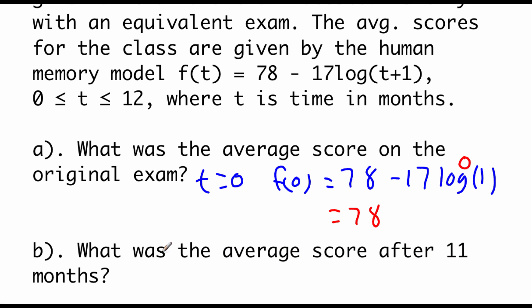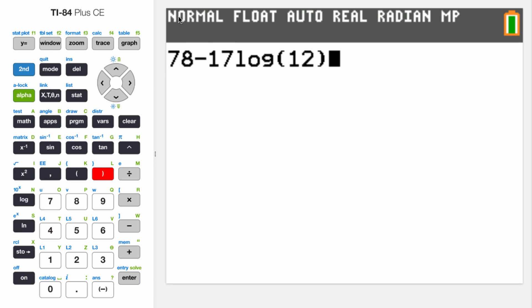Now we're going to look at what the average score was after 11 months. So we look at f of 11. So that's 78 minus 17 times the log of, well, if we take 11 plus 1, that's 12. Now I'm going to plug this one into my calculator. So 78 minus 17 log of 12. Hit enter. And after 11 months have gone by, the average score is a 59.7 if we round that off.